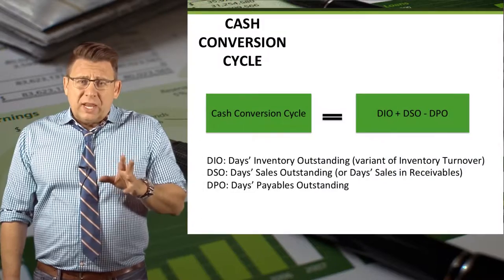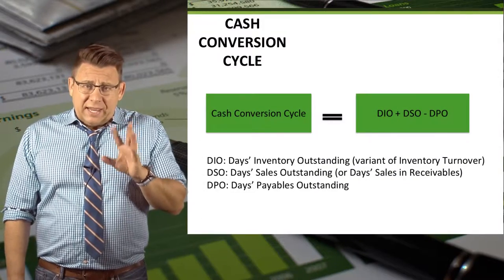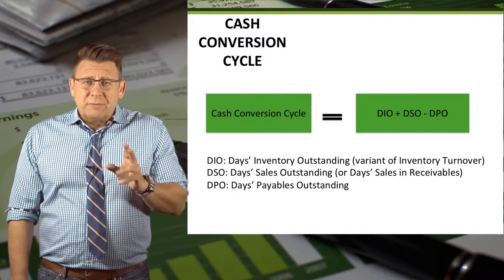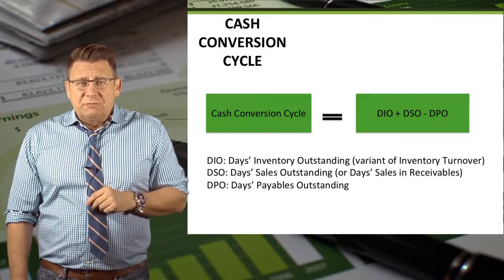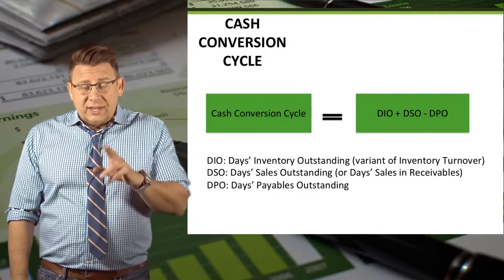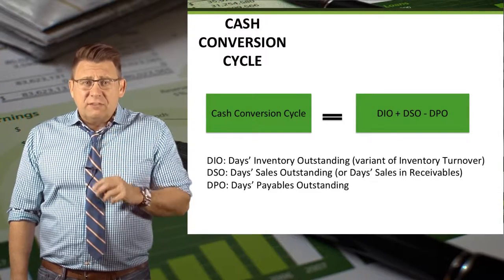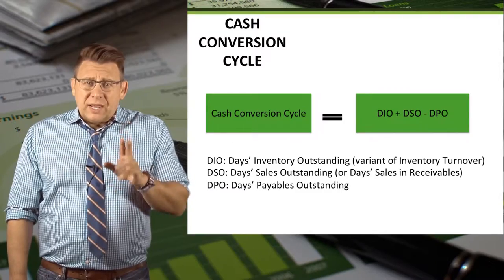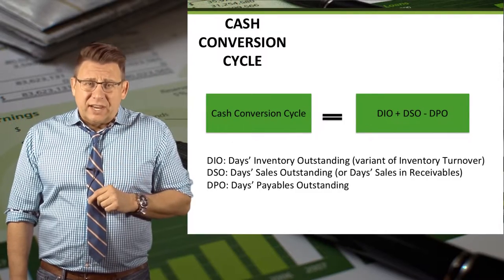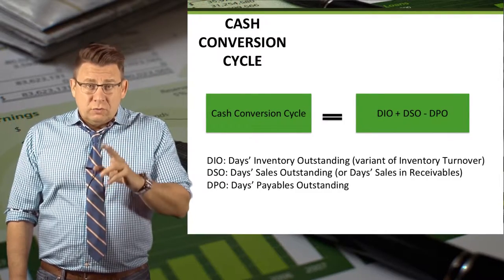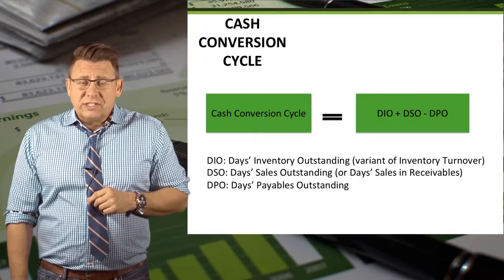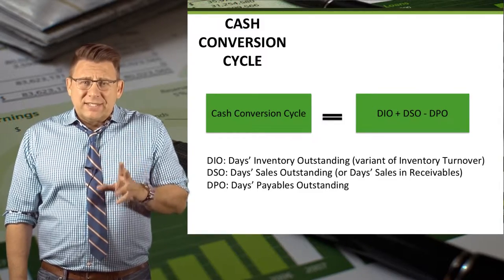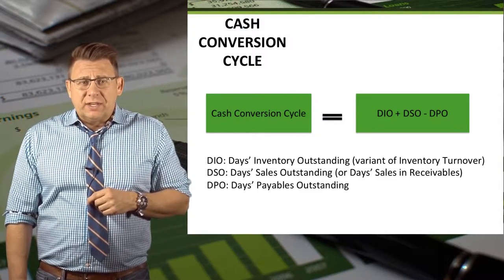The formula is days inventory outstanding, which is sometimes called days sales and inventory and is a variant of the inventory turnover ratio, plus the days sales outstanding, which is sometimes called the days sales and receivable, minus days payable outstanding.